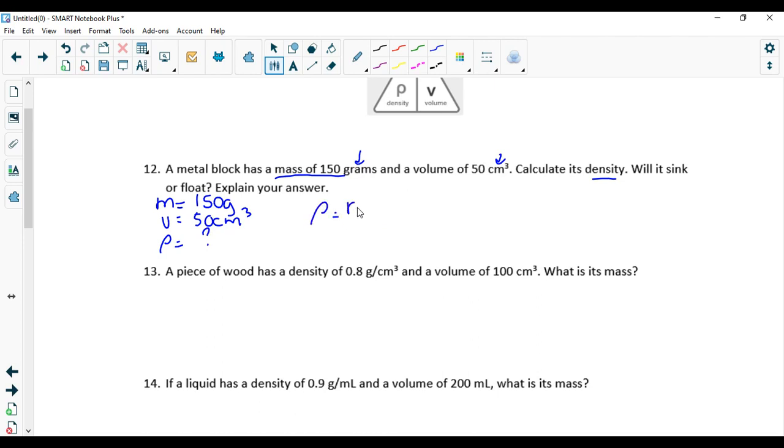So density, what is the formula? Yes, mass divided by volume: 150 grams divided by 50 centimeter cube. That will give me 3 grams per centimeter cube. And because it is higher than 1 gram per centimeter cube of water, because water is 1 gram per milliliter or centimeter cube, then it will sink. Good job.